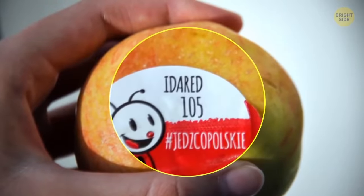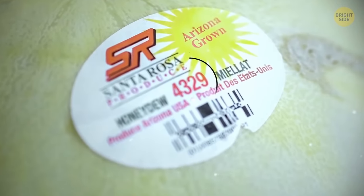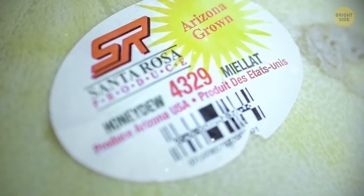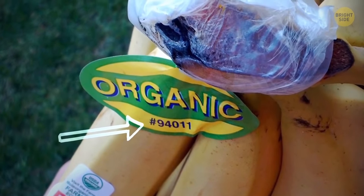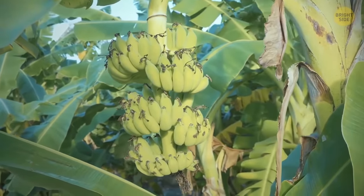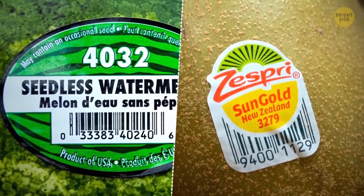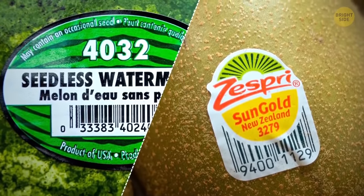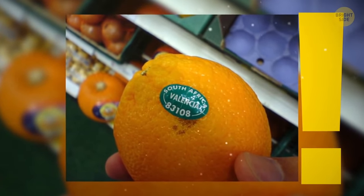Stickers on fruit seem to provide zero information about the product. But if you look closer, you'll find some numbers that can tell you more. A 5-digit number where the first number is 9 is a good sign. You're about to buy an organic product. A 4-digit number starting with a 3 or 4 means it was conventionally farmed. And if the number starts with an 8 and there are 5 digits, well, it's best to leave it on the shelf.